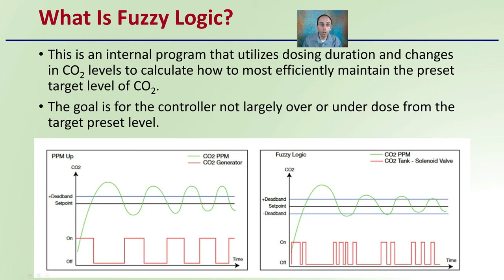The goal is for the controller to not largely over or under dose from the preset target level. Here's a graphical analysis of what this looks like. Initially, we may have some dosing that occurs and it overshoots, goes below, and overshoots again, going through these swings.